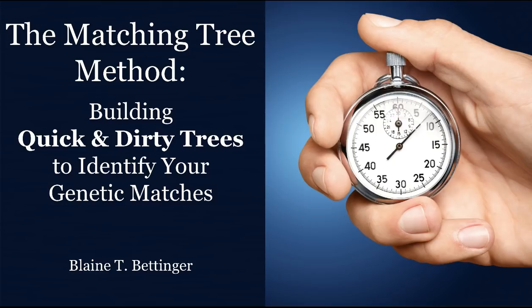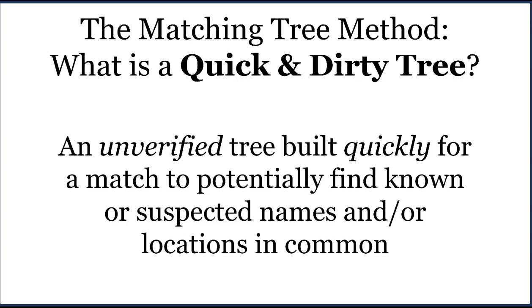Hello, my name is Blaine Bettinger, and I want to talk to you about the matching tree method, otherwise known as building quick and dirty trees. Quick and dirty trees is a way of identifying your genetic matches and how they might be connected to you. A quick and dirty tree is an unverified tree that's built very quickly, only for potentially finding known or suspected names or locations that you share in common with one of your genetic matches.